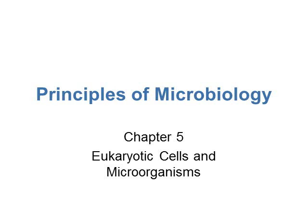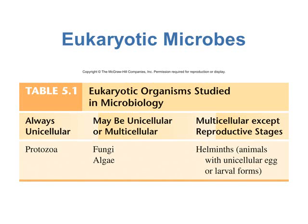This is part 1 of 3 on chapter 5. In this chapter we're going to be looking at eukaryotic cells and then the different types of microorganisms that have eukaryotic cells. These are the different types of eukaryotic microbes we're going to be looking at in this chapter, as shown in table 5.1 from your book.